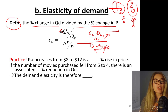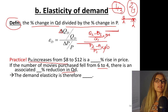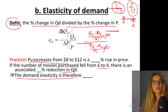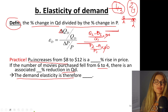Let's practice this. Price of movies increases from $8 to $12 — this is a blank percent rise in price — and if the number of movies purchased fell from 6 to 4, there is a blank percent reduction in quantity demanded. The demand elasticity is therefore what? I actually want you to pause this video and work on this on your own — go ahead and pause it, and after you finish, keep watching. I'm waiting for you.